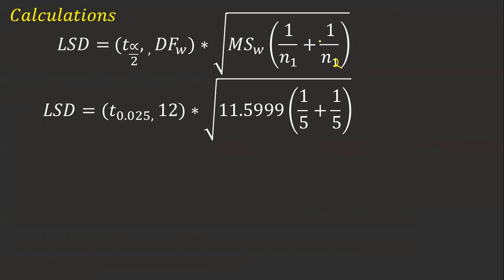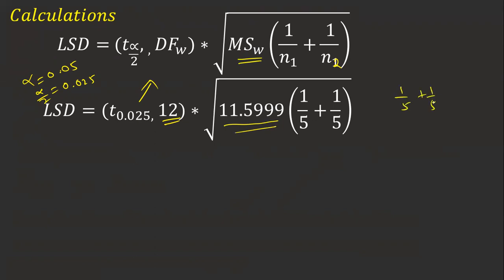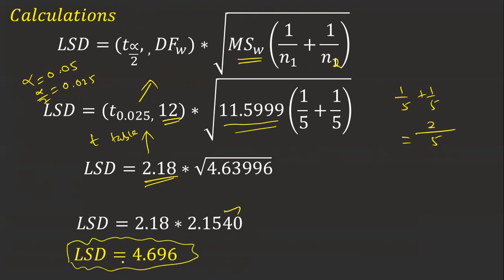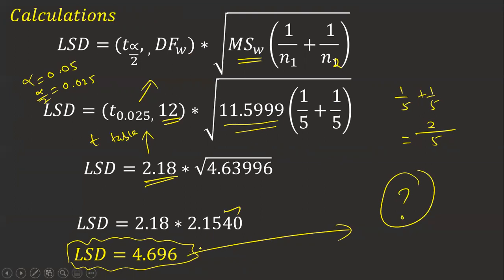LSD is calculated using this formula: LSD equals T(alpha/2, DFW) multiplied by the square root of MSW times (1/N1 + 1/N2). Here, LSD uses T at 0.025 because alpha equals 0.05, so alpha by 2 is 0.025. I check the T table for degrees of freedom 12 and get 2.18. MSW is already given as 11.59. For 1/N1 plus 1/N2, with N1 and N2 both equal to 5, that is 1/5 + 1/5, giving 2/5. The square root of (11.59 × 2/5) comes to approximately 2.1548. Multiplying 2.18 by 2.1548 gives the LSD value of approximately 4.69. Now I am going to compare this LSD with the pairwise mean differences.